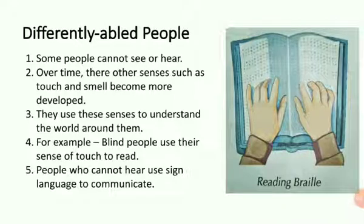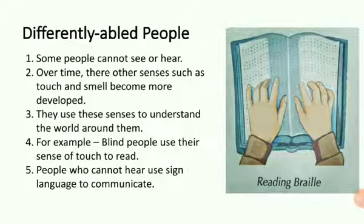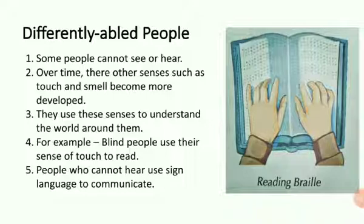Sometimes in some people, senses do not work properly — these are differently abled people. We must be sensitive towards their needs and take care of them. Some people cannot see or hear, but over time their other senses, such as touch and smell, become more developed and they use these senses to understand the world around them.